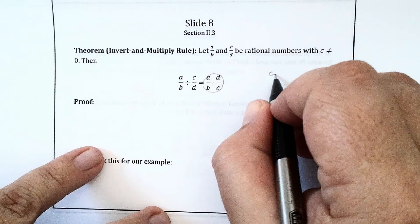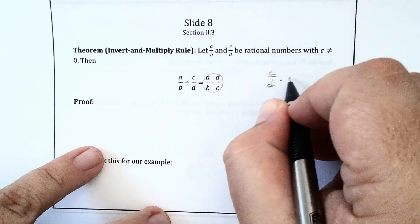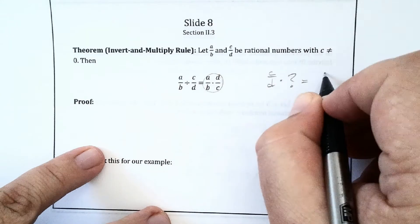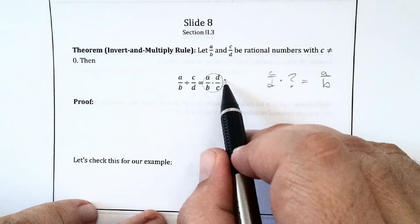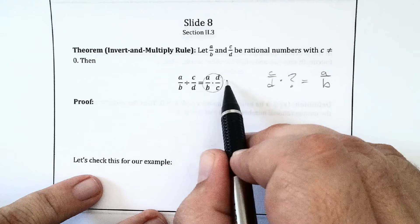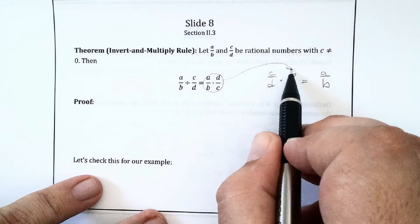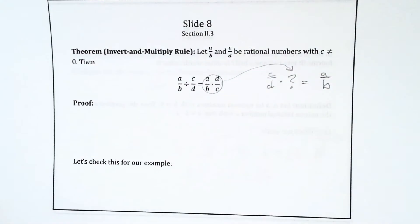I'm trying to figure out C over D times what is equal to A over B. That's what it means to ask what is this quotient. And by saying the quotient is equal to this product, I'm saying that product fills in the blank. So to prove this, we just need to show that it fills in the blank.